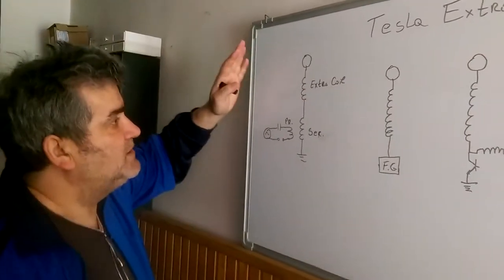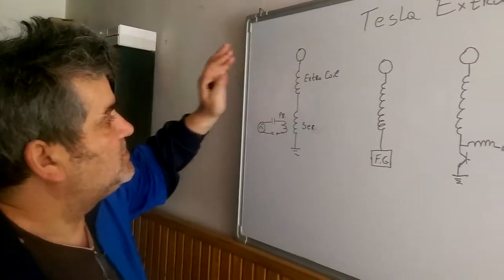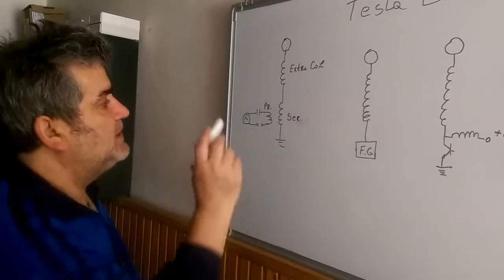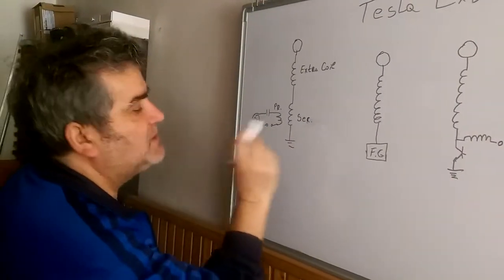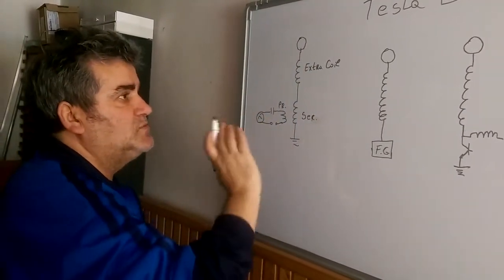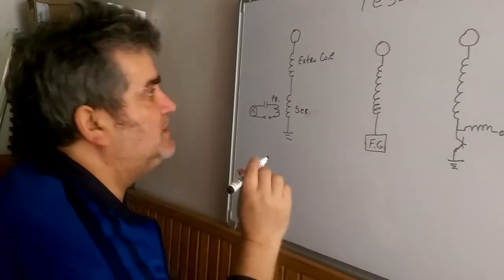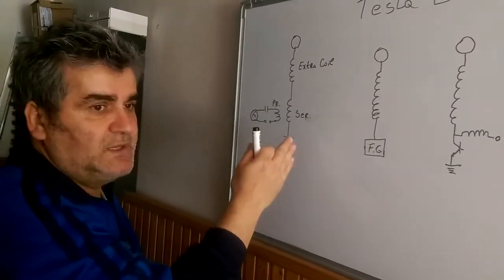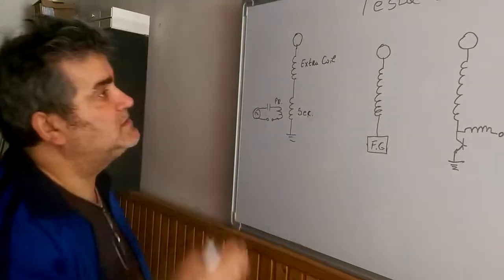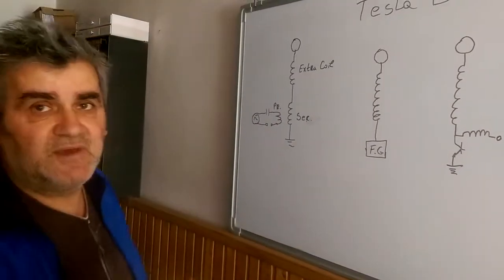So he multiplied voltage too much with using extra coil. But primary and secondary coil must be closed for extra coil if you want to give the best results. And it is how, with extra coil, he first time detected a standing wave of Earth.